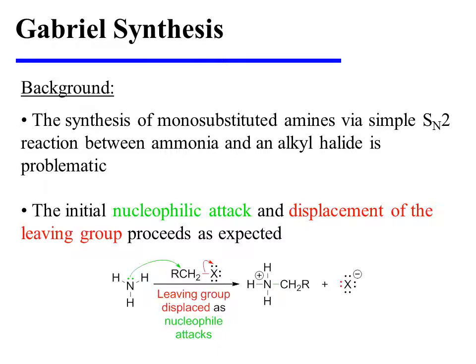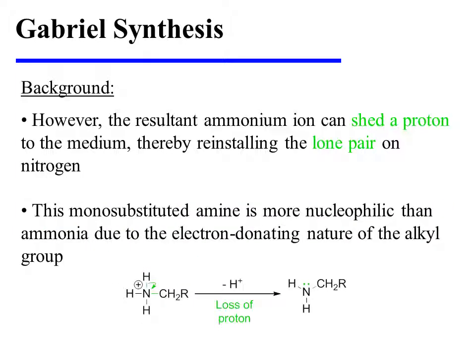The synthesis of monosubstituted amines via simple SN2 reaction between ammonia and an alkyl halide is problematic. The initial nucleophilic attack and displacement of the leaving group proceeds exactly as expected. However, the resultant ammonium ion can shed a proton to the medium, thereby reinstalling the lone pair of electrons on nitrogen.